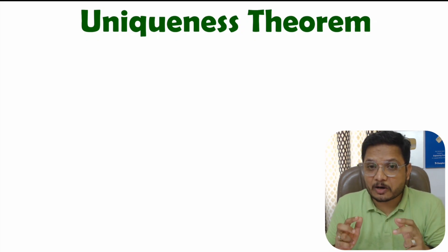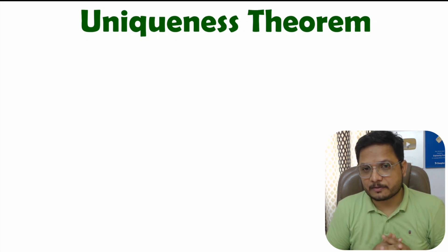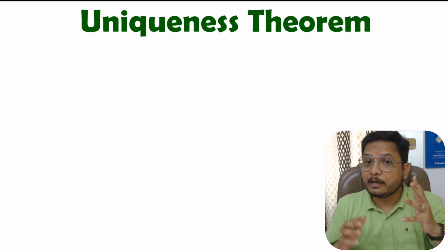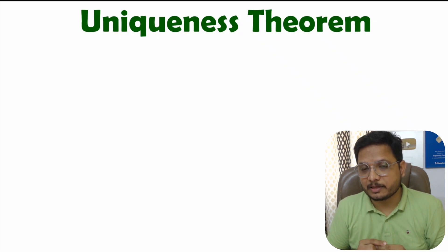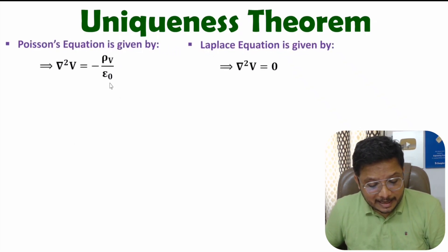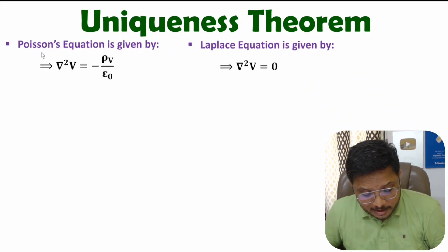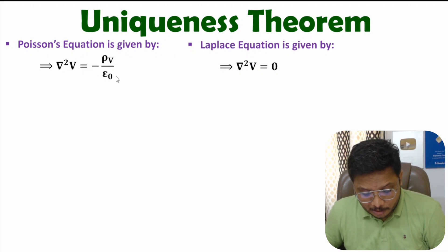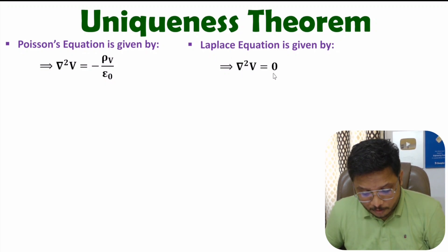The uniqueness theorem is based on Poisson's equation and Laplace equation. In my last video, I have explained and derived both equations. Poisson's equation is del squared V equals minus rho_V by epsilon naught, and Laplace equation is del squared V equals zero.